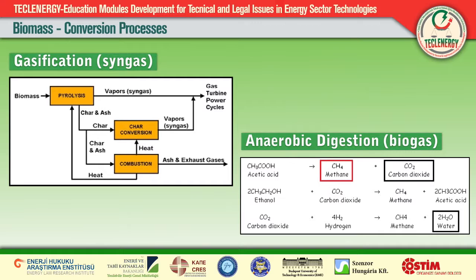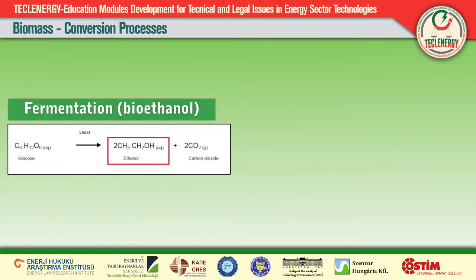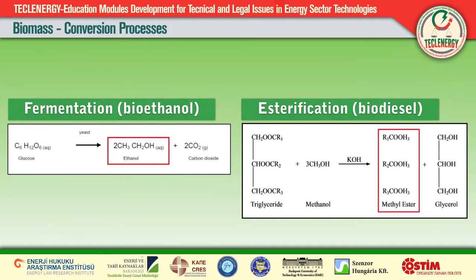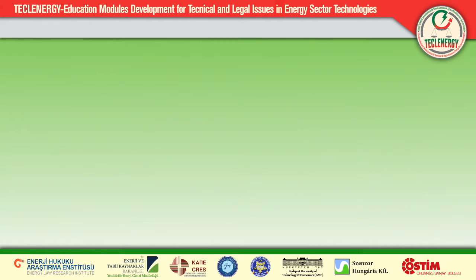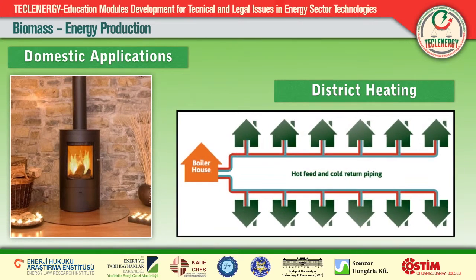The next category is biochemical conversion, which includes anaerobic digestion and fermentation. During anaerobic digestion, biogas — consisting of methane, carbon dioxide, and water vapor — is produced by bacteria in the exclusion of oxygen, and can be utilized for example in gas motors. In the fermentation process, yeast converts biomass to ethanol and carbon dioxide. The third category is physicochemical conversion, such as biodiesel production by esterification, in which the molecules of vegetable oil are decomposed into smaller oil molecules. Using these technologies, domestic and industrial heat, electricity, and fuels for transport can be produced.